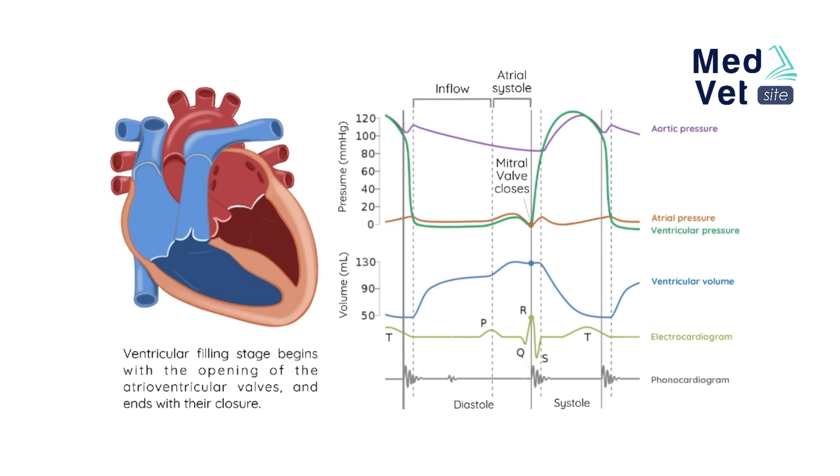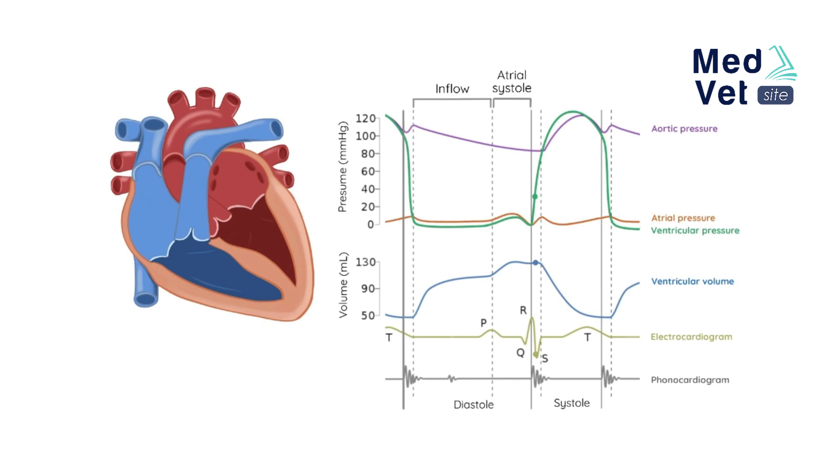Blood must leave the left ventricle into the systemic circulation. The electrical impulse travels from the sinus node to the atrioventricular node, causing ventricular depolarization represented by the QRS complex. Ventricular systole begins, increasing pressure without volume changes because the valves are closed. This period is known as the isovolumetric contraction stage.